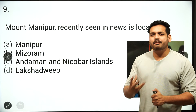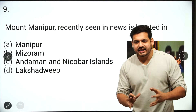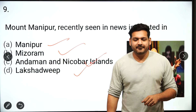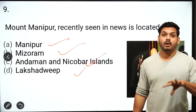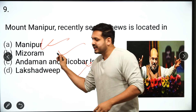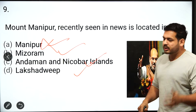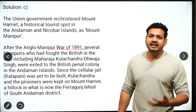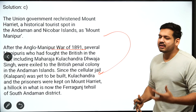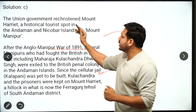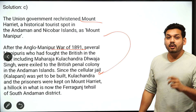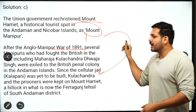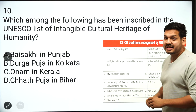The ninth question is a current affairs question: Mount Manipur is located in which place — Mizoram, Andaman and Nicobar, or Lakshadweep? You might think the answer is Manipur, but it is not. The correct answer is option C — Andaman and Nicobar Islands. What happened was: during the Anglo-Manipur War of 1891, many people were jailed at Andaman and Nicobar. The government renamed the important tourist spot Mount Harriette to Mount Manipur to commemorate the Anglo-Manipur War.